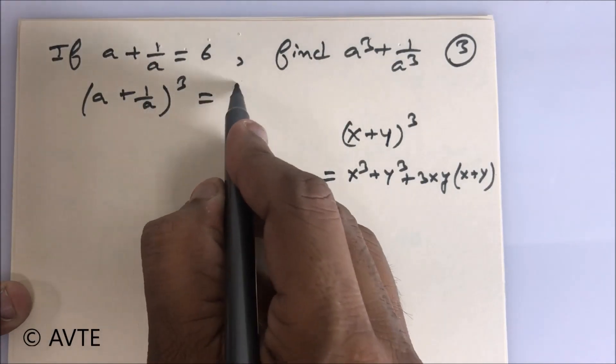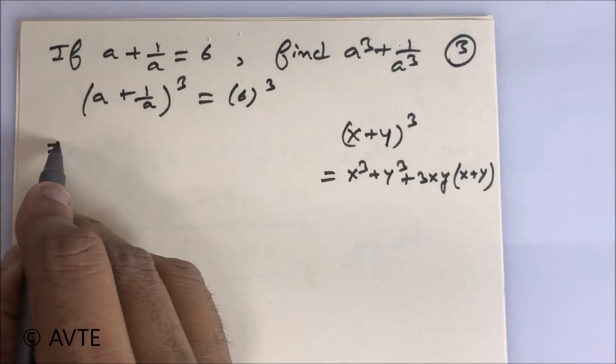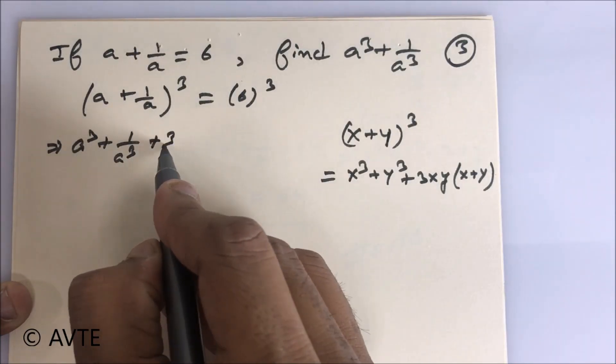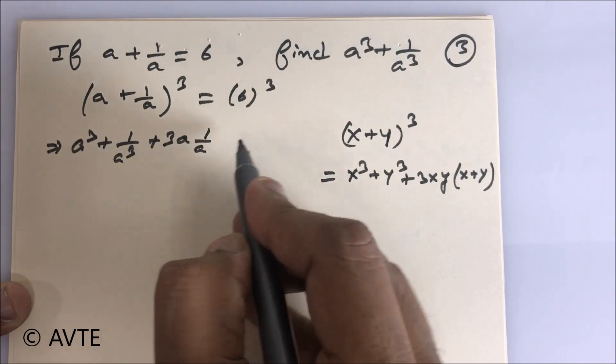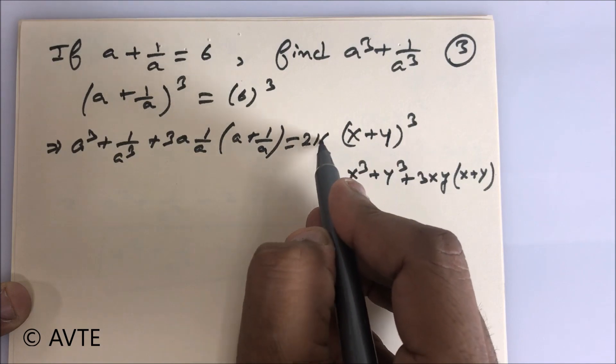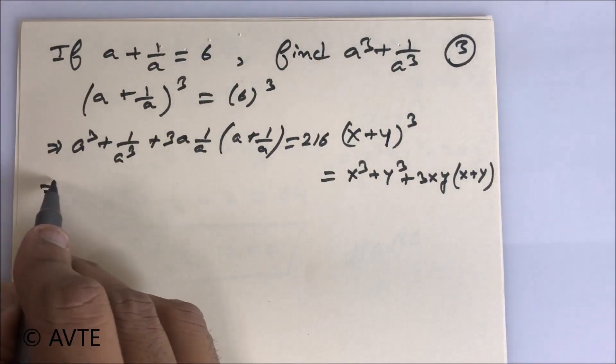Here you go. That is a³ plus 1/a³ plus 3a(1/a) in bracket (a plus 1/a), and 6³ is 216. This will cancel.